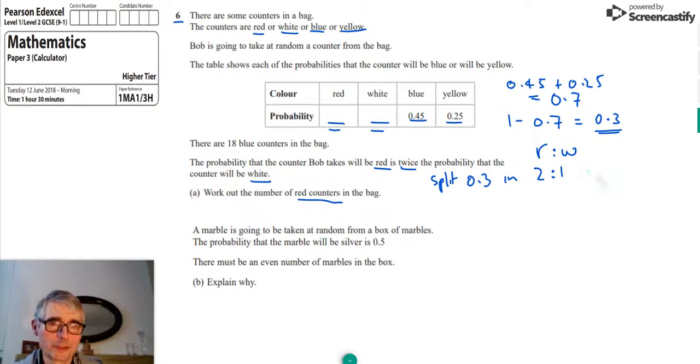So what we do, we add them two together, 2 plus 1 will give us 3. And we know then, therefore, that 3 parts is equal to 0.3. So one part we can get by dividing both sides by 3, and that will give us 0.1.